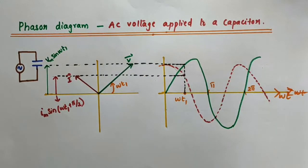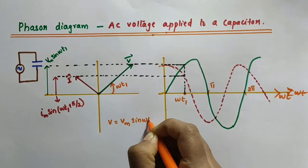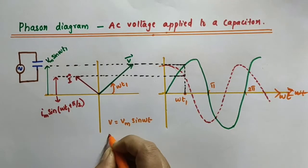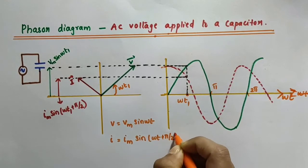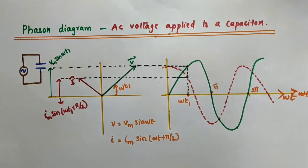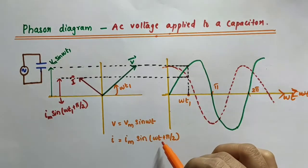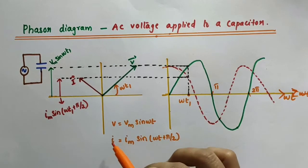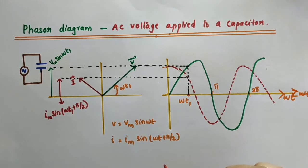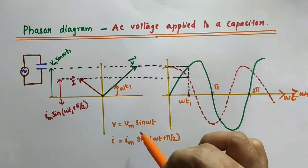When we discussed AC voltage applied to a capacitor, we took the voltage as V equal to Vm sin(ωt) and got the expression for the instantaneous value of current as I equal to Im into sin(ωt + π/2). You can see there is a phase difference between the applied voltage and the instantaneous current. Since it is plus π/2, the current leads the voltage by π/2 — that is, voltage lags behind the current by π/2.